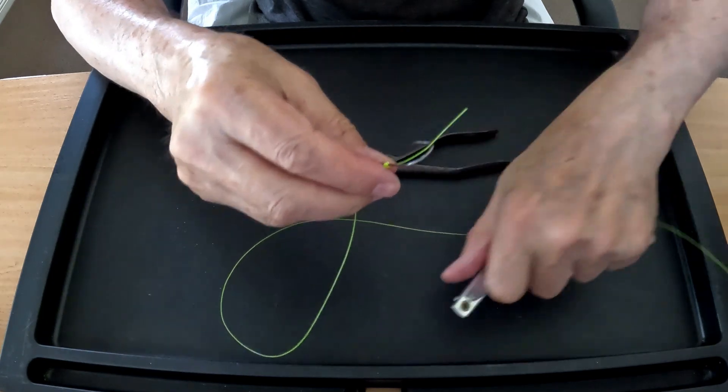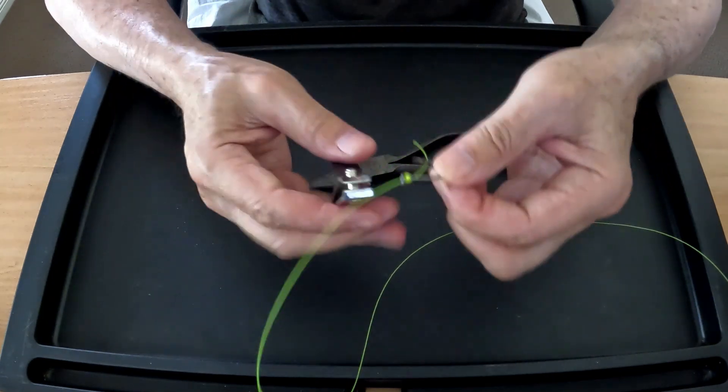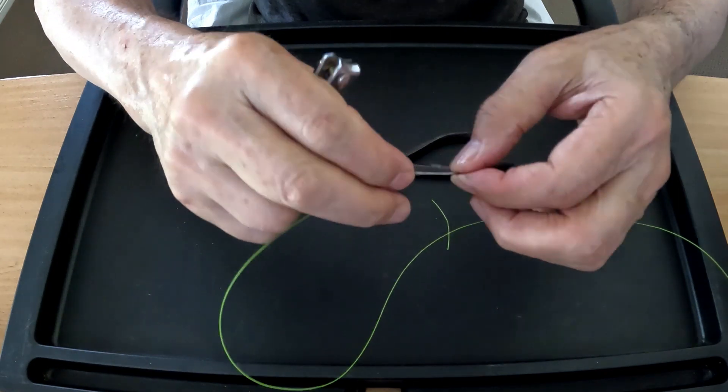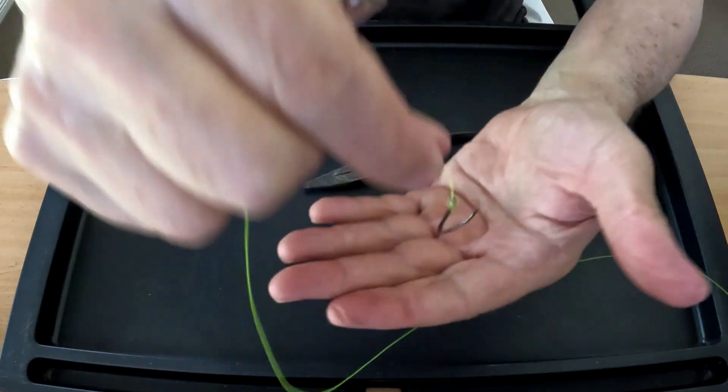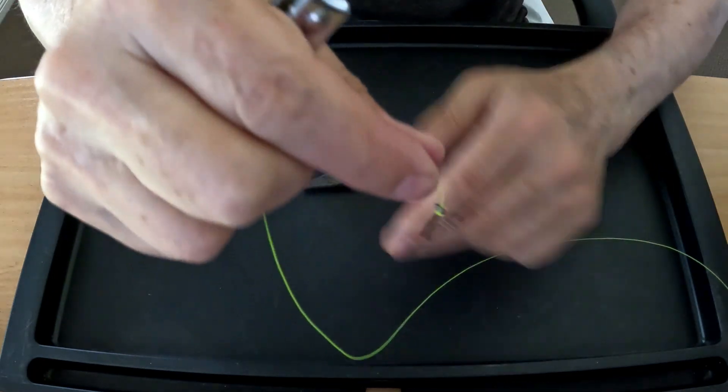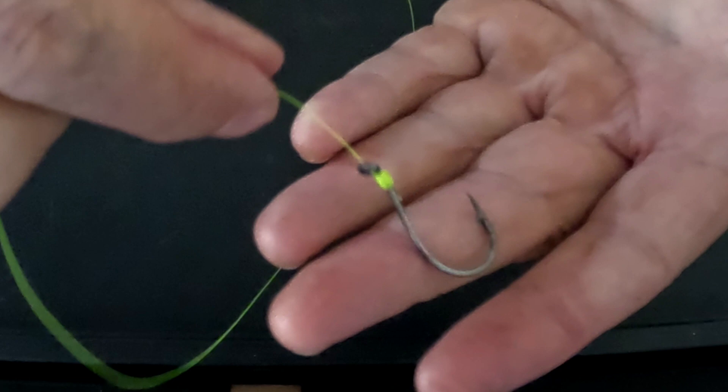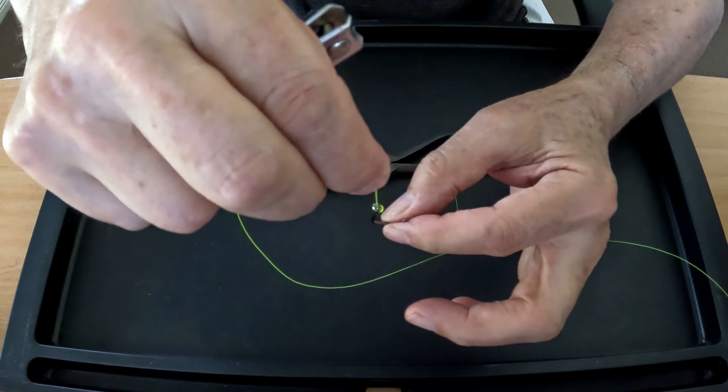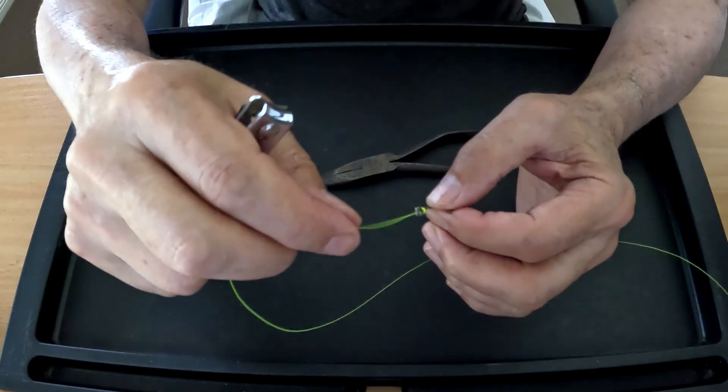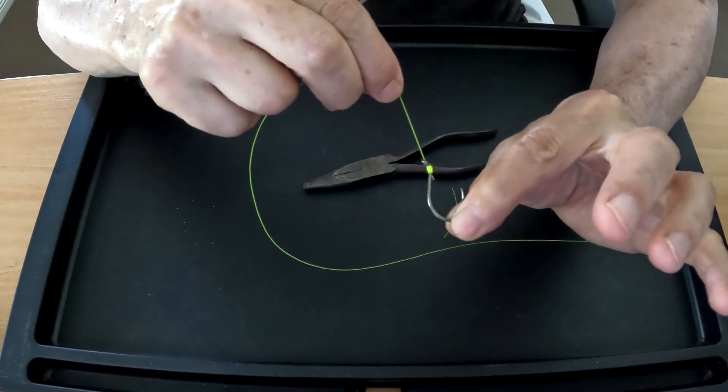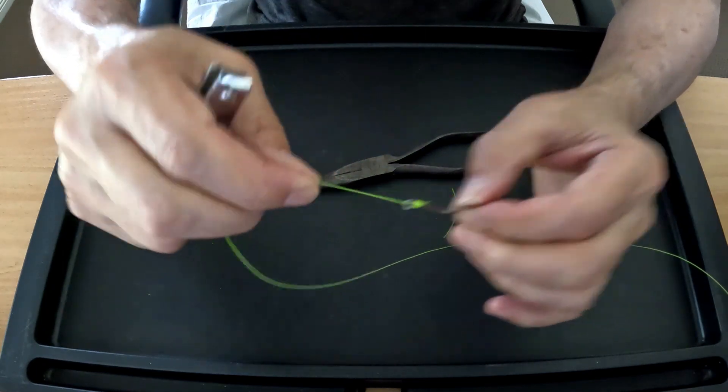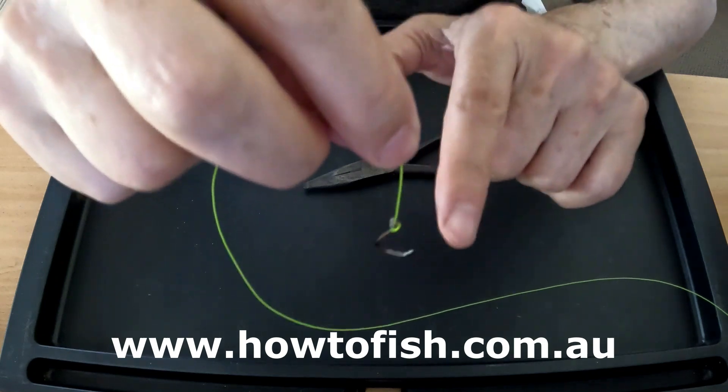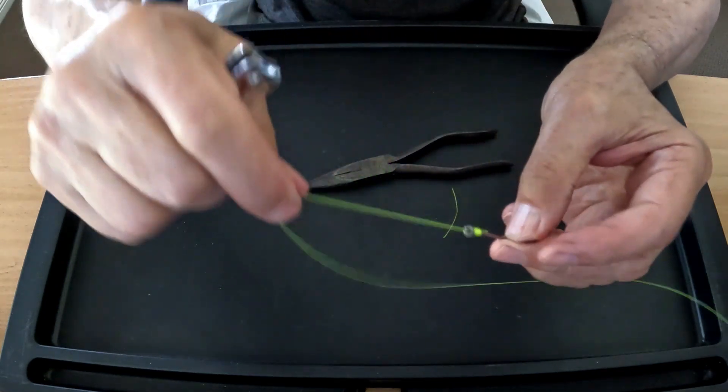Once I've done that, I'll then just take that tag off. And what the great thing is, it actually holds the line and the hook in the same plane. In other words, that hook comes straight off. It doesn't hold off at an angle. The hook point is parallel to the line. And that's what I want to do.